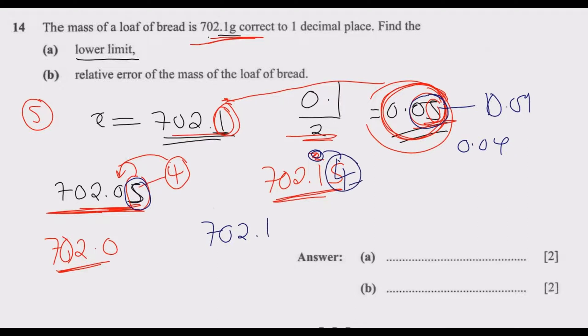This is the maximum it can take. If this goes to 5, then it changes. It's no longer 702.1, but becomes 702.2. So the interval x would lie is 702.05 to 702.14.